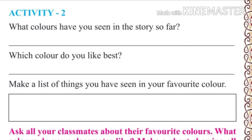Activity 2. Think for yourself and answer the following questions. The first question is: what colors have you seen in the story so far?